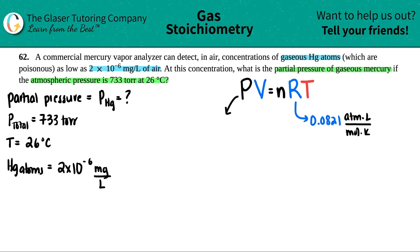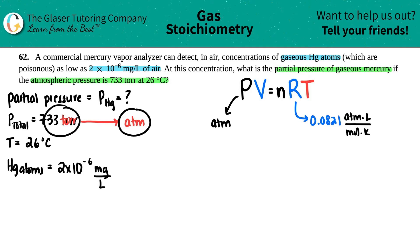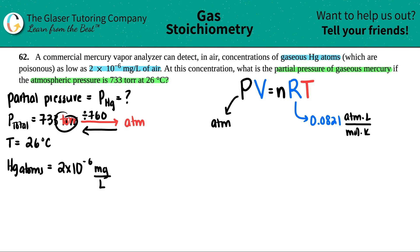The pressure needs to be in atm to match the units of R. The pressure was given in torr, so we need to convert. One atm equals 760 torr, so to go from torr to atm you divide by 760. Going back from atm to torr you multiply by 760.